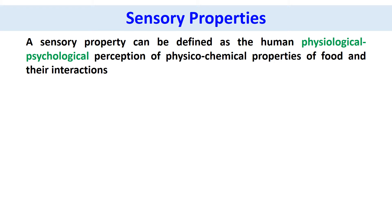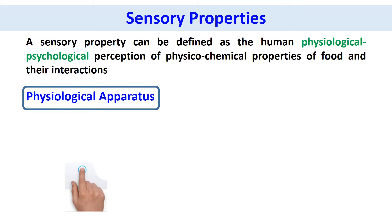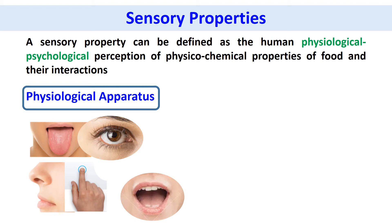Considering the fundamental understanding of sensory perception from the earlier slide, we can define sensory properties. A sensory property can be defined as the human physiological and psychological perception of physical and chemical properties of food and their interactions. In most cases they interact with each other — for example, taste and odor perception may not be perceived individually but rather in combination. The physiological apparatus examines the food and interacts with its properties. This apparatus includes fingers for touch, mouth that is oral cavity, eyes with retina, tongue with taste buds, and nose with olfactory.